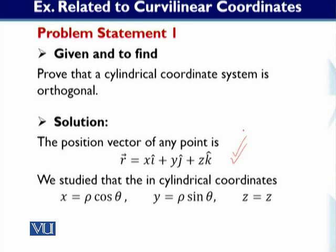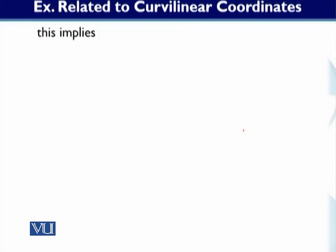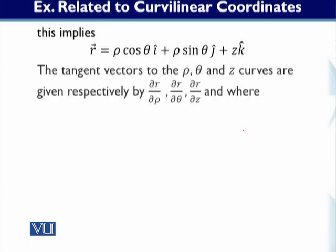So we substitute these in. R becomes equal to rho cos(theta) i + rho sin(theta) j + z k. This is the position vector expressed in cylindrical coordinates. From here, we need to define the tangent vectors.